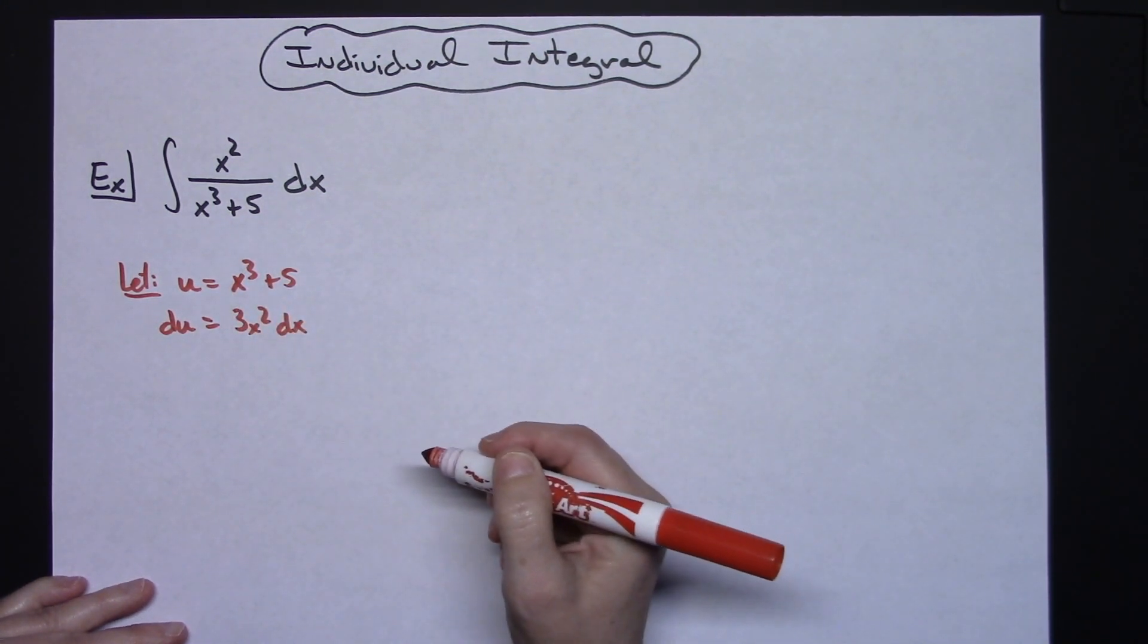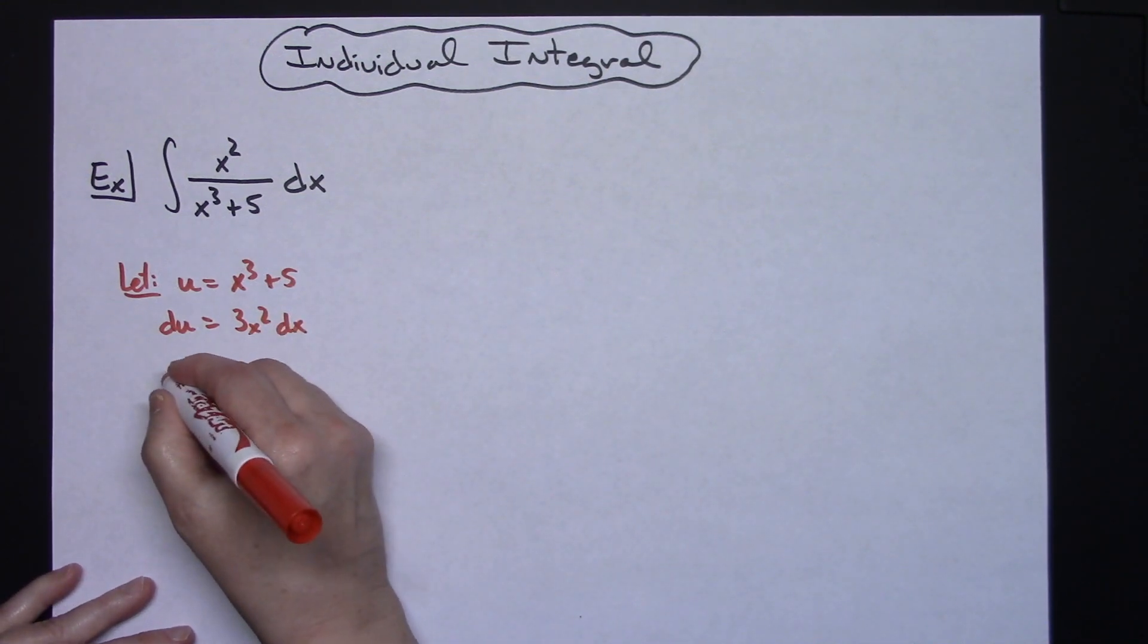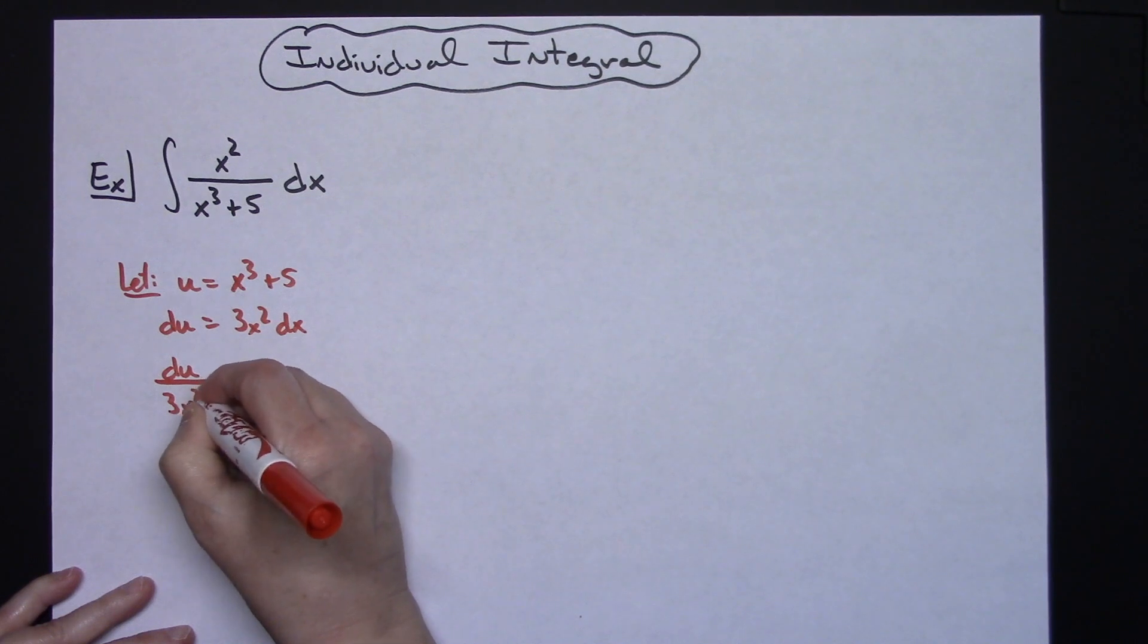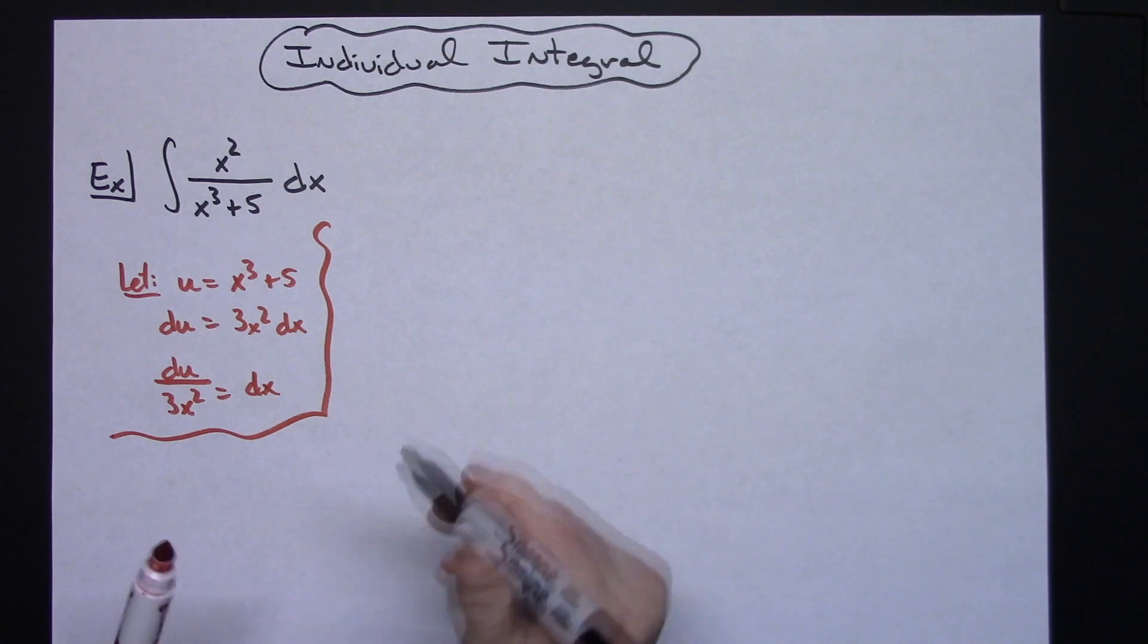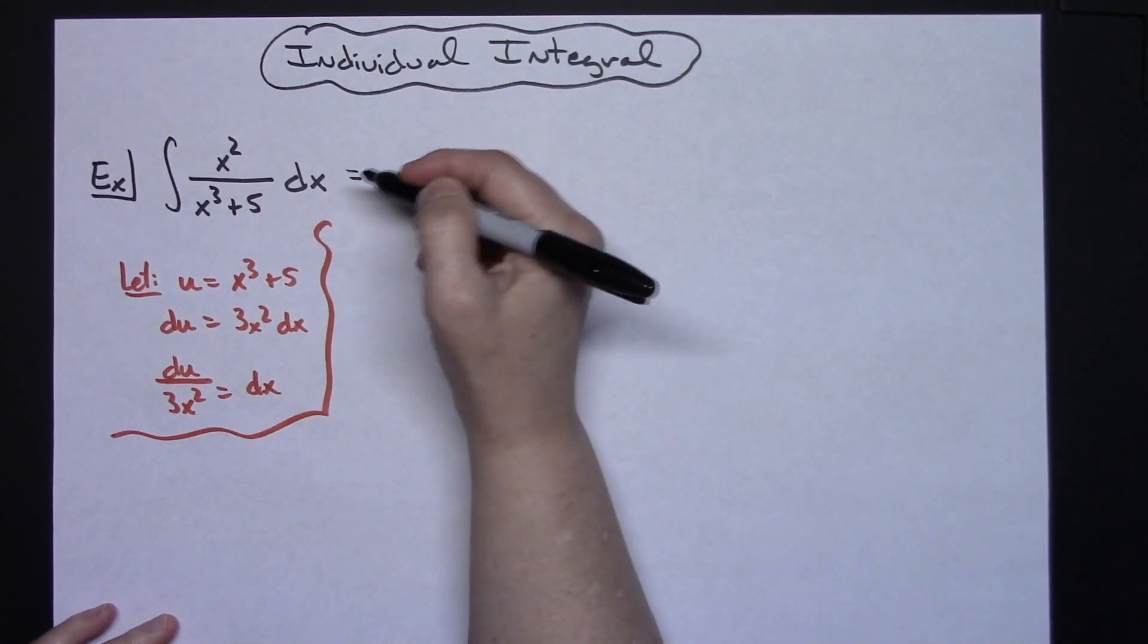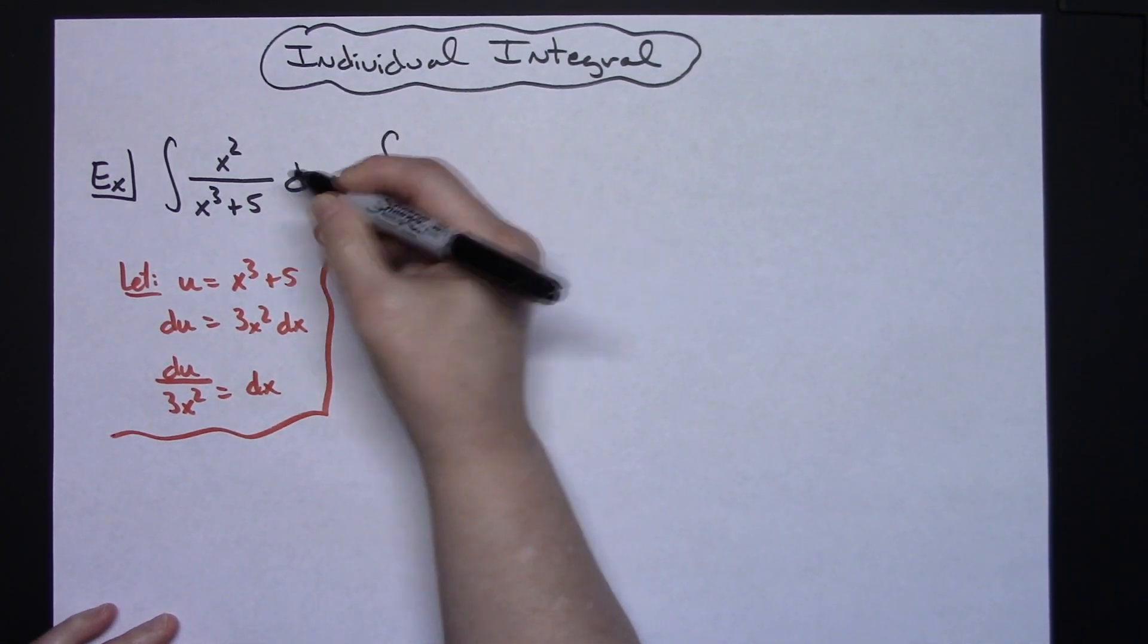Now I'm going to go ahead and solve that equation all the way down for dx. So du over 3x squared is equal to dx. Now after I get that done I'm going to come back up here to my original integral. I'm going to start substituting things.